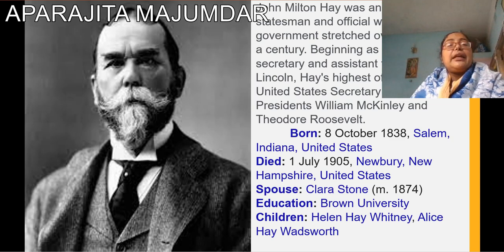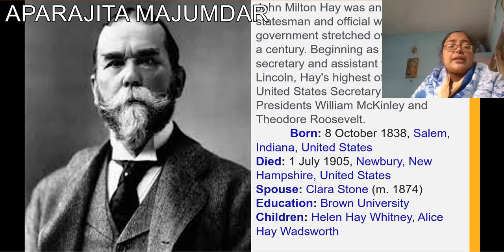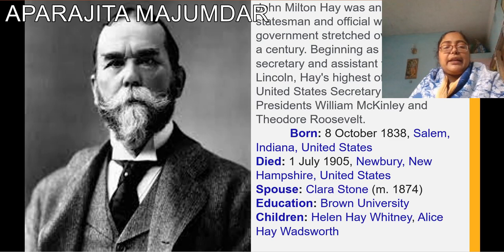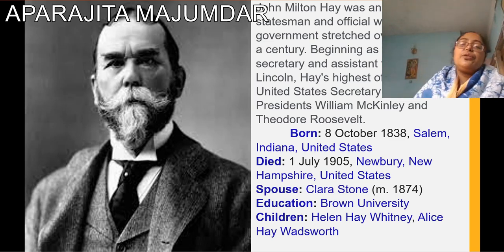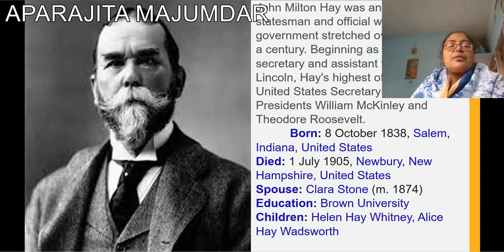John Milton Hay was an American whose official career started in the government section and extended almost up to half a century — that means almost 50 years. He started his career as a private secretary to Abraham Lincoln. But the highest office which he held was as Secretary of State under the United States under President William McKinley and Theodore Roosevelt.